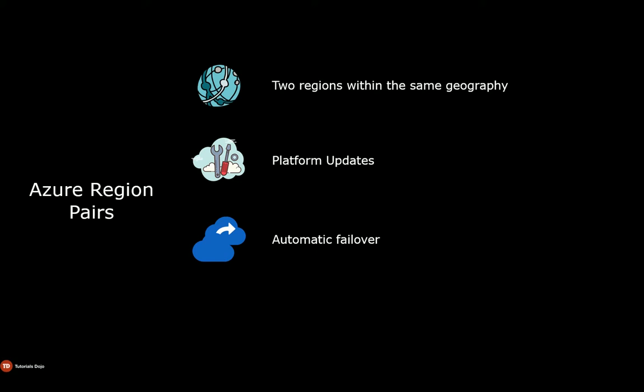Note that you cannot create your own region pair and not all services use a region pair, but you can create your own disaster recovery plan by leveraging Azure services such as Azure Site Recovery. If multiple regions experience outages, Microsoft will prioritize the recovery of one region in every region pair as quickly as possible.